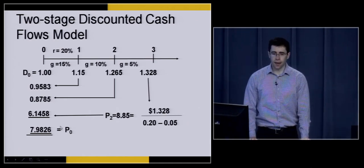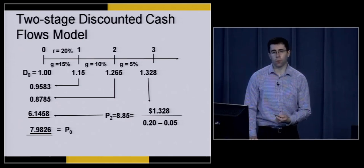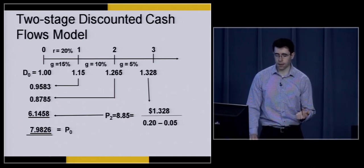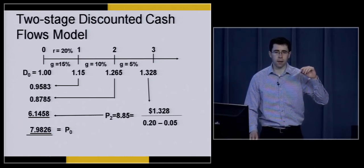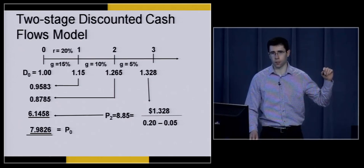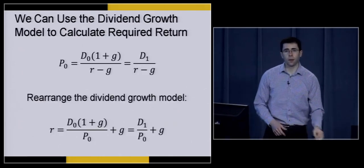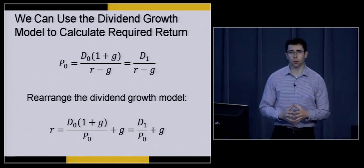These supernormal growth examples are more complicated, but they're more based in reality. If we're valuing a company, this is more along the lines of what we'd want to do — dividends don't always grow at the same constant rate, and this approach is a lot more applicable to the real world. Now that we've covered the three formulas for valuing stocks, let's talk about how we can use one of these models to predict returns on a stock.